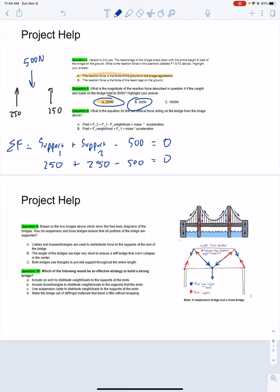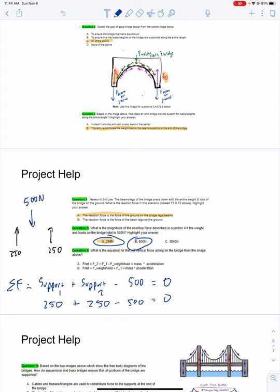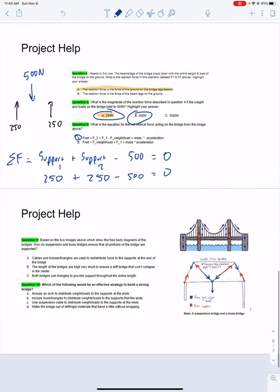What is the equation for the net vertical force acting on the bridge from the image above? Up is always the positive direction in physics, and we'll continue with that convention. We have F2 and F1 both pointing upwards, and then our weight is pointing downwards, so that would correspond to option A: F2 plus F1 minus our weight equals the mass of the bridge times the acceleration of the bridge.